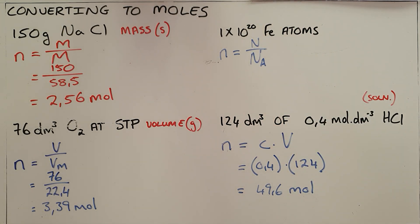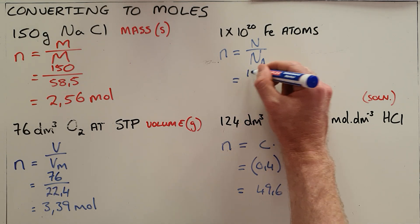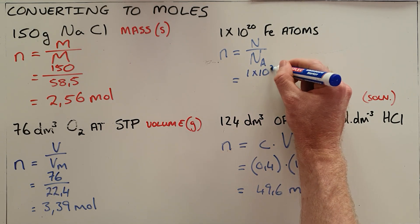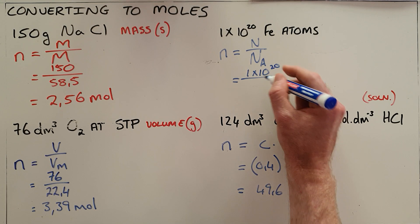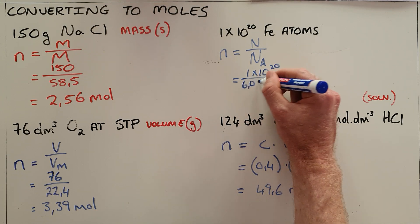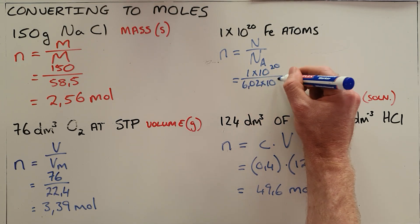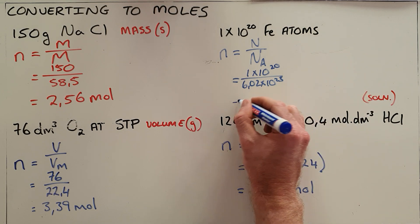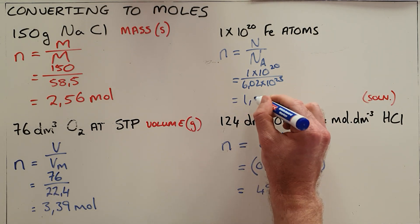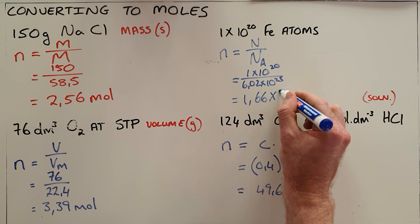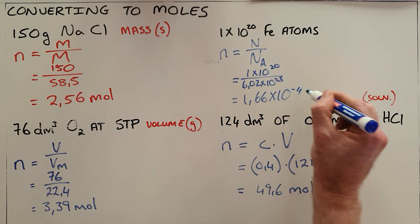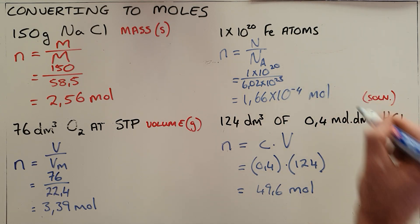That is 1 times 10 to the 20, the given amount, divided by Avogadro's number, 6.02 times 10 to the 23, the constant, which means that our number of moles here is 1.66 times 10 to the power of negative 4 moles of iron.